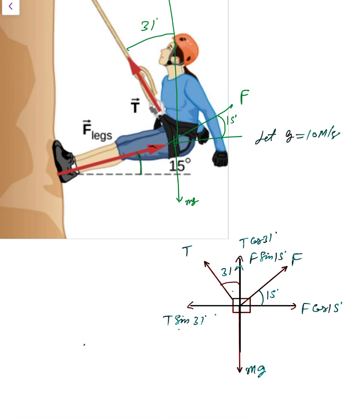So mass is 52 and g is 10, so that is 520. Otherwise you can also use 9.8 if you don't want to simplify, because I have solved it with that. So simply you can use 9.8.